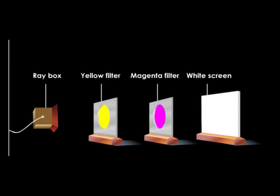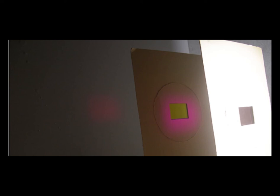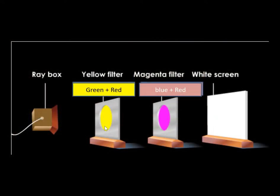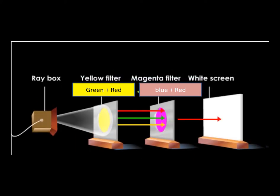What will happen when we place two secondary color filters together? Using two secondary color filters will allow the color that is not subtracted to pass through. The yellow filter allows green, red, and yellow light to pass through. The magenta filter allows blue, red, and magenta light to pass through. Therefore, red is the only color light that will pass through both filters and is shown on the screen.